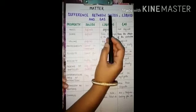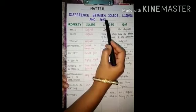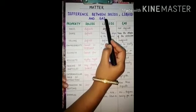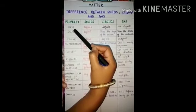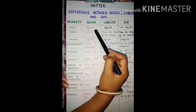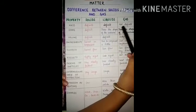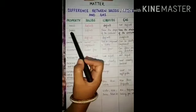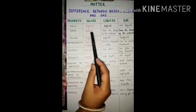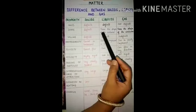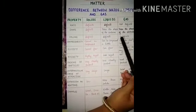Difference between solids, liquid and gas. We have studied the properties of solid, liquid and gas, and the difference is based on those properties. The first property is mass. Solids have definite mass. Liquids also have definite mass. But gases do not have definite mass. The second property is shape. The shape of solids is definite. Liquids take the shape of the container, and gases also take the shape of the container.